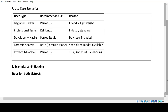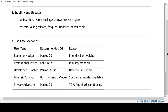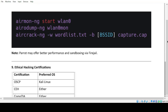Example Wi-Fi hacking steps work on both distros. Note: Parrot may offer better performance and sandboxing via Firejail.